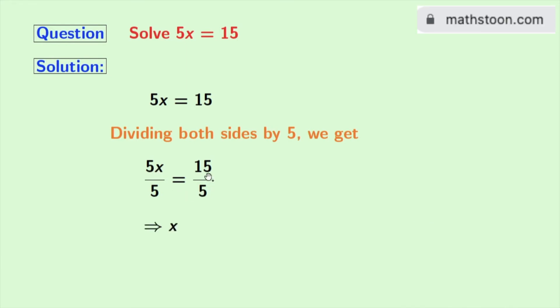And in the right-hand side, 15 by 5 is 3. So we get 3. So finally, we get x is equal to 3 as our final answer.